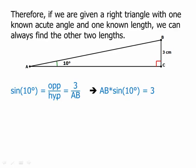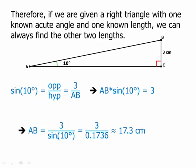Divide by sine 10. Sine 10 is some number. So we divide by that. And if we need it, we could compute this on a calculator. Sine 10 degrees is about 0.1736. 3 divided by that number is about 17.3. That's the length of hypotenuse AB.